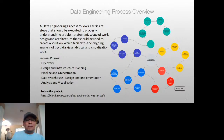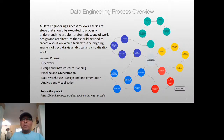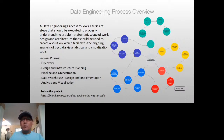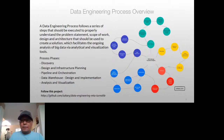We then move into the data warehouse phase, where we talk about the design and implementation — once we have the data available, what are the next steps to model the data, what schema model to use, and what database optimizations are required. After completing the data pipeline into our data warehouse, we start looking at data analysis and visualization, discussing the difference between the two and how to approach each.